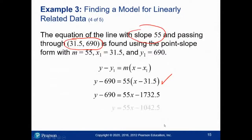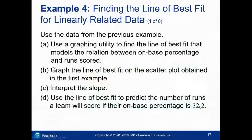So using the same data, can you use a graphing utility — the book uses TI-84s — to find what's called the line of best fit, and then plot that and interpret the slope? Then once I have this line of best fit, can you predict the number of runs a team will score if they're on a base percentage of 32.2%?